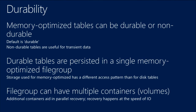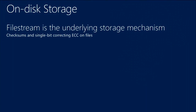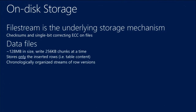The file group can have only one memory-optimized data file group in your database, but you can have multiple containers spread out over multiple disks. This will help in database recovery because you can load the files from all disks in parallel, so recovery speeds happen at the aggregate speed of all your I/O subsystems. We use file stream as the underlying storage mechanism, and we added checksums and error-correcting code to it.